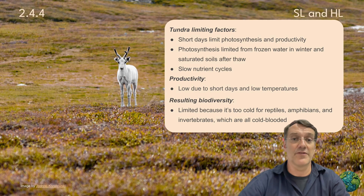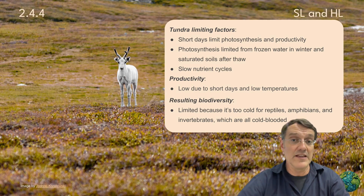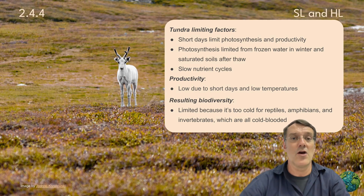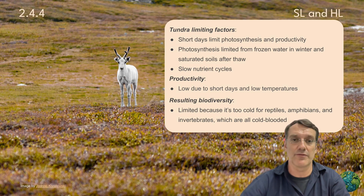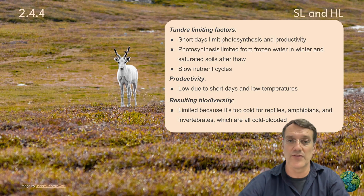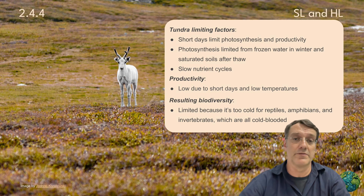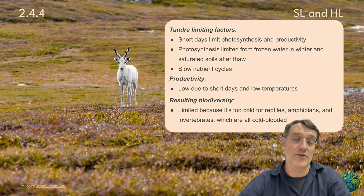Tundra biomes face different challenges. Short days severely limit photosynthesis and productivity, while frozen winter conditions and waterlogged summer soils further restrict plant growth. The slow nutrient cycles and extreme conditions result in limited biodiversity — it's simply too cold for reptiles, amphibians, and most invertebrates to survive outside of a few short summer months.